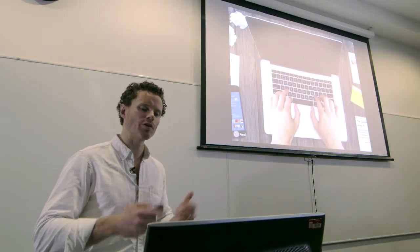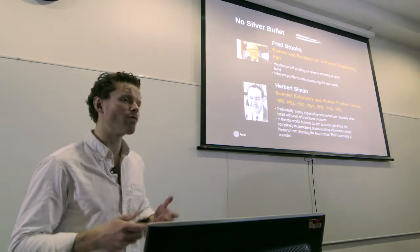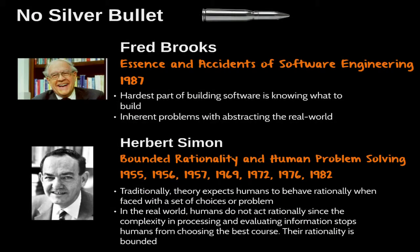Why is this problem so difficult? Well, back in 1987, a very prominent software engineer called Fred Brooks wrote a paper called 'The Essence and Accidents of Software Engineering,' better known as the Silver Bullet Paper. Brooks split the challenges of building and designing software into two groups of problems. The first were accidents — the problems that engineers face when turning requirements into code. The second set are essential problems: the problems of actually gathering requirements and turning those into specifications. Brooks said these are the hardest of the two — in fact, they will never be solved, hence there will be no silver bullet.